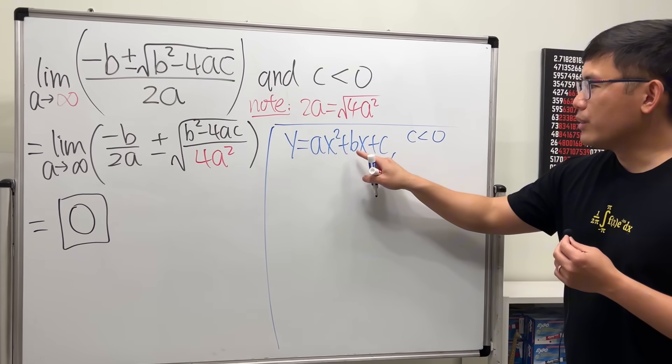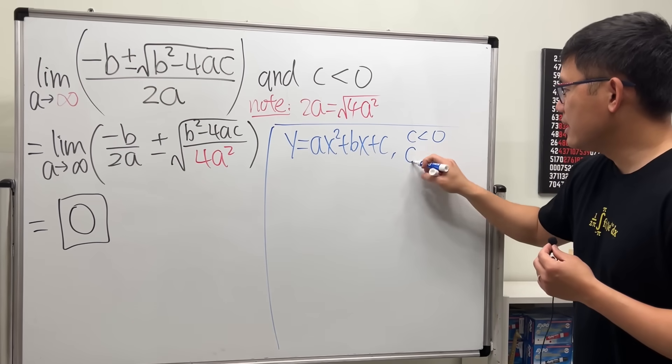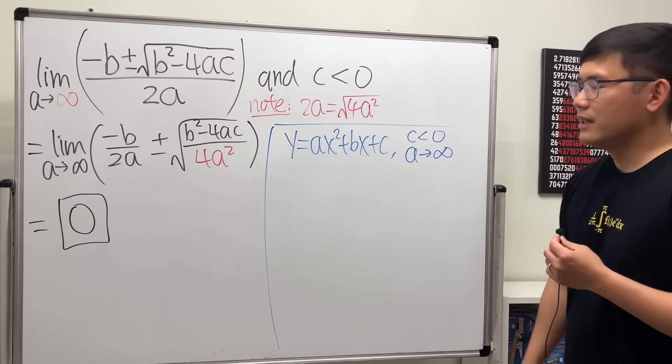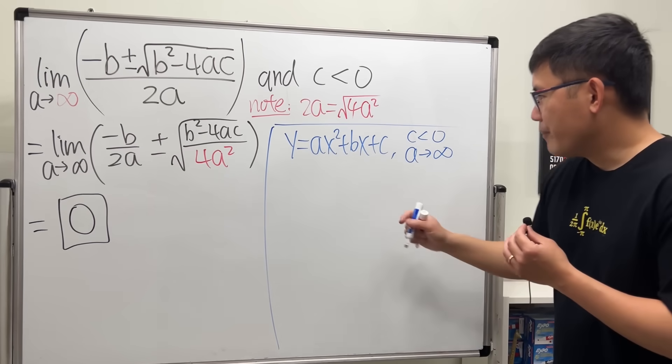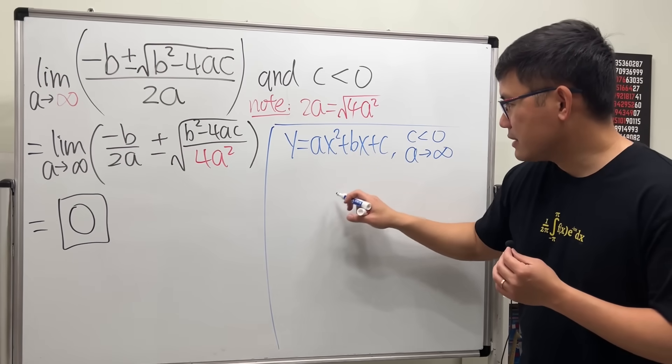Let's consider y equals ax squared plus bx plus c. Here I want c to be less than zero—yeah, c is negative. b we don't care, and let's say a is approaching infinity, getting bigger and bigger.